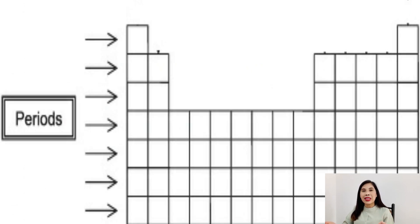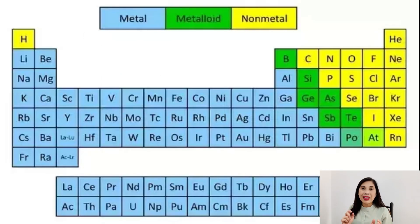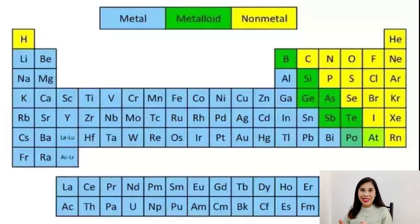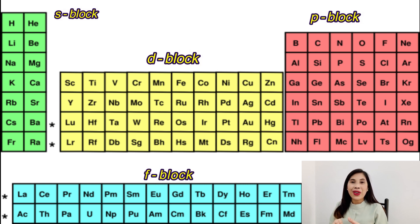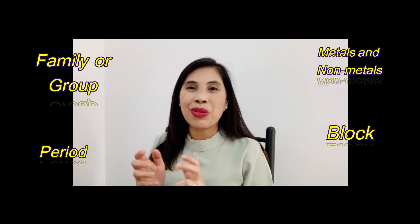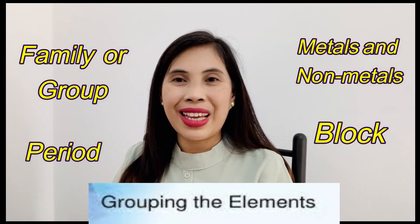The period is the horizontal arrangement of the elements in the periodic table. Then we have metals and non-metals, which are separated by a zigzag line. Elements along the zigzag line are known as metalloids — they have characteristics similar to metals or non-metals and are also known as semi-metals. For the block: family 1 and 2 are the S block; the lanthanides and actinides series are the F block; and we also have the D block and the P block.